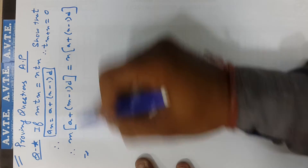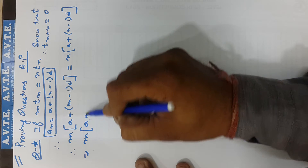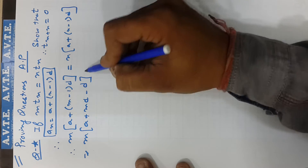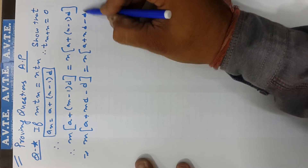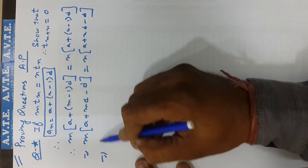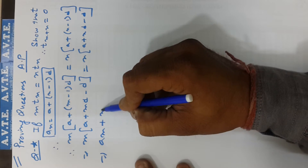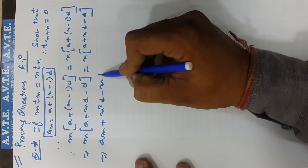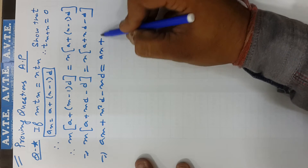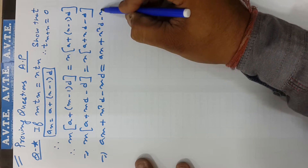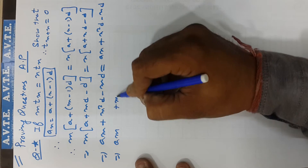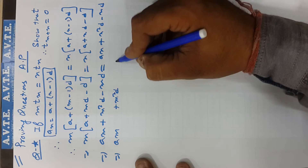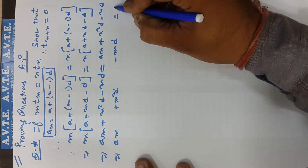We expand the left bracket: m times (a + md - d), and expand the right bracket: (a + md - d). So we get am + m²d - md is equal to an + n²d - nd.